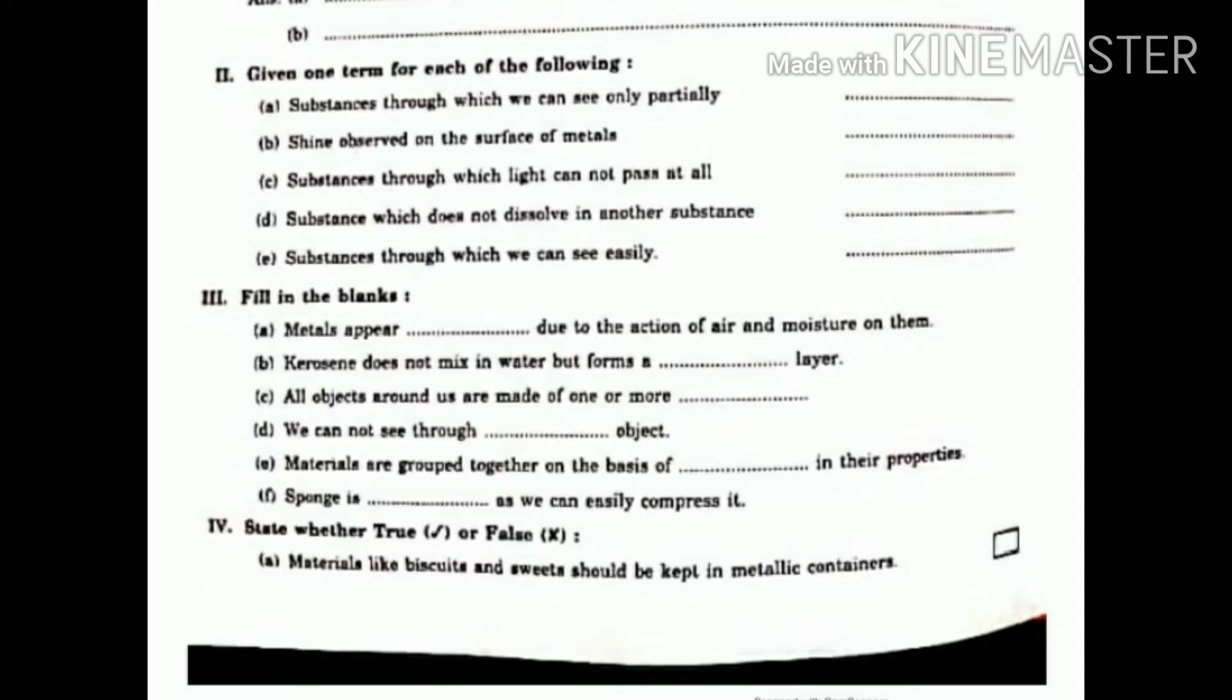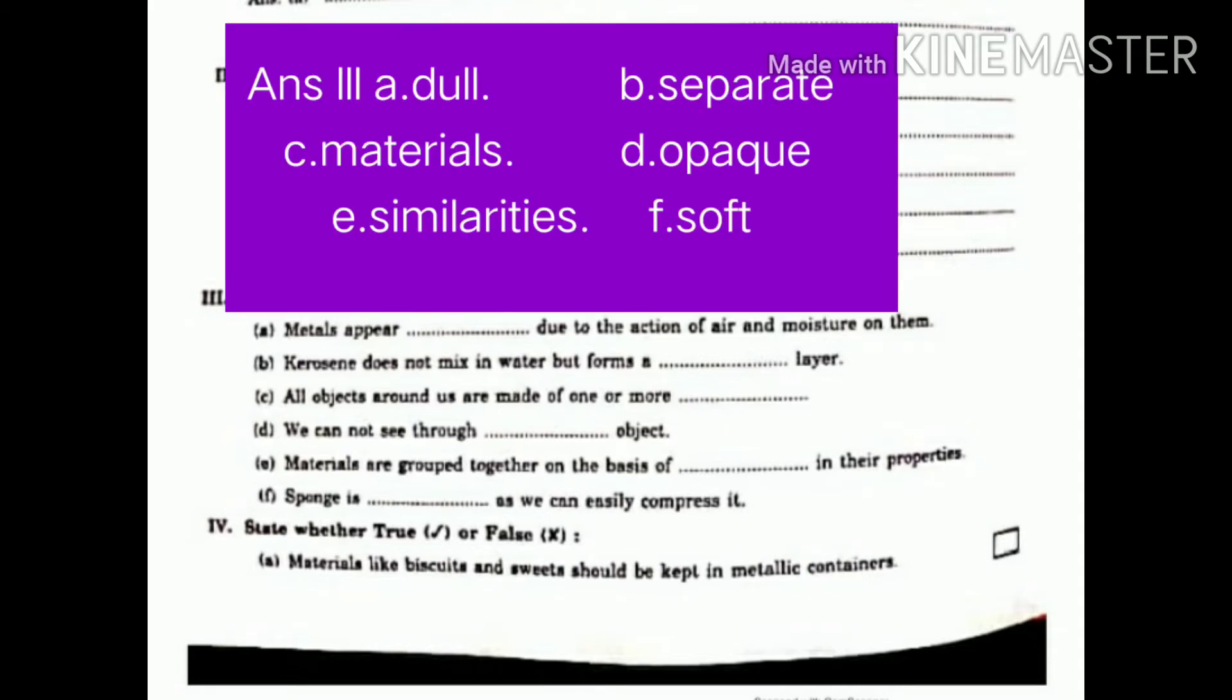Third. Fill in the blanks. A. Metals appear dull due to the action of air and moisture on them. B. Kerosene does not mix in water but form a separate layer. C. All objects around us are made of one or more materials. D. We cannot see through opaque object.